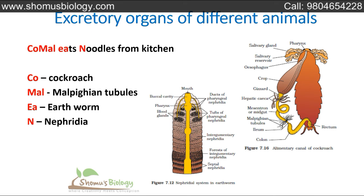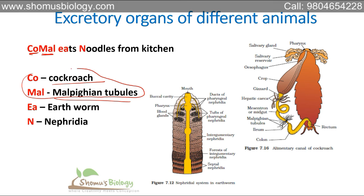The last topic is excretory organs of different animals, which is frequently asked in NEET, AIPMT, and Class 11 exams. Use the sentence: 'Comal eats noodles from kitchen.' CO-Mal: CO for cockroach and Mal for Malpighian tubules — so cockroach's excretory organ is Malpighian tubules. Ea-N: Ea for earthworm and N for nephridia — so earthworm's excretory organ is nephridia.